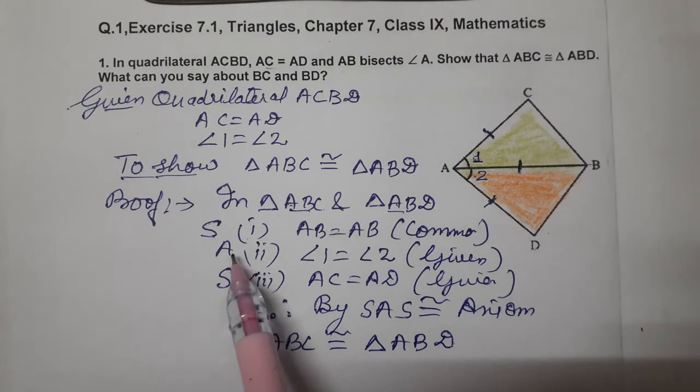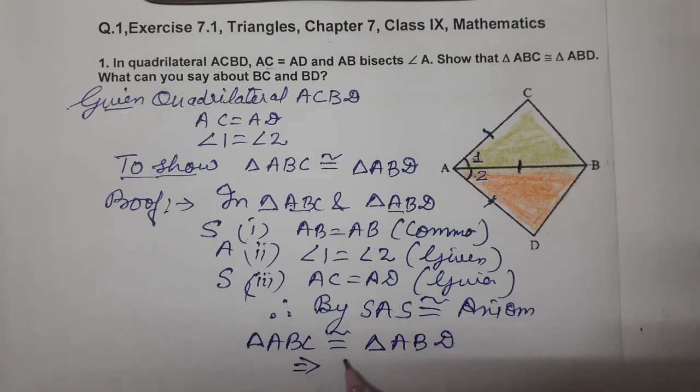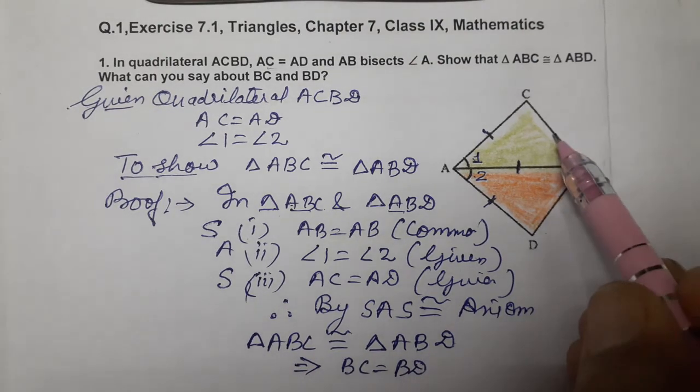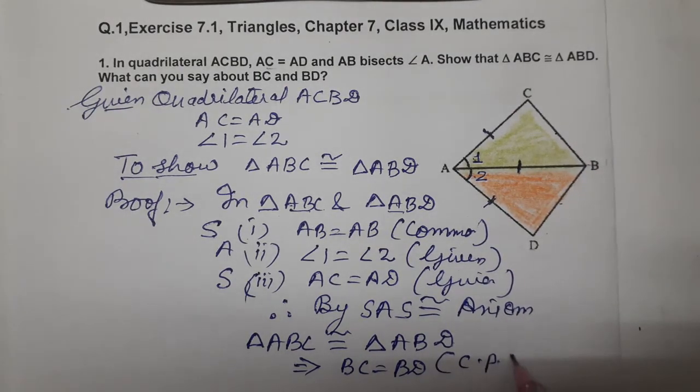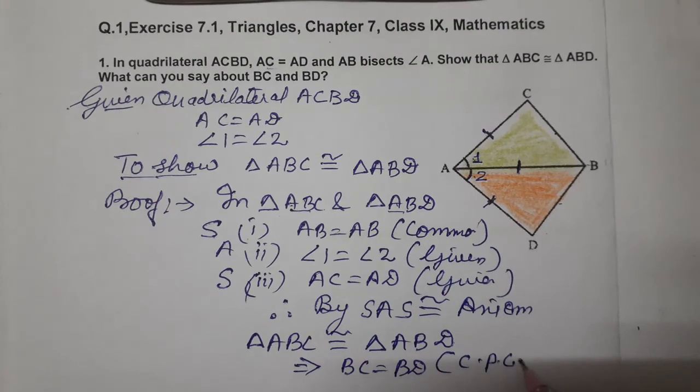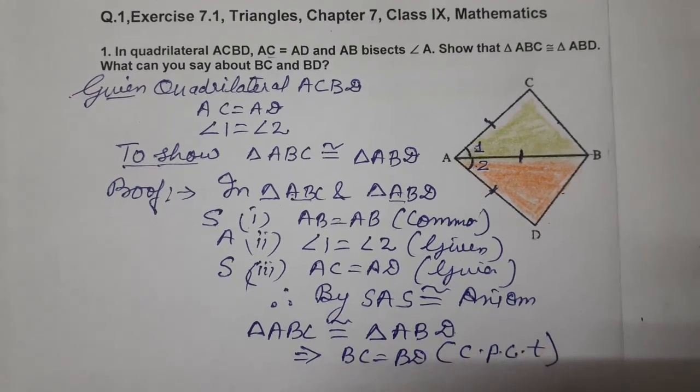This implies BC equals BD. The reason is CPCT - Corresponding Parts of Congruent Triangles. If triangles are congruent, their remaining sides and angles are equal. Hence we have completed the question.